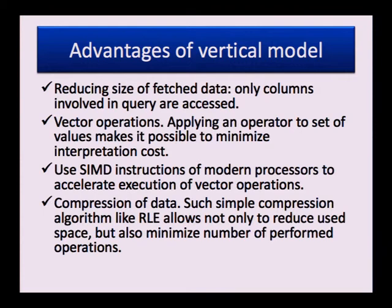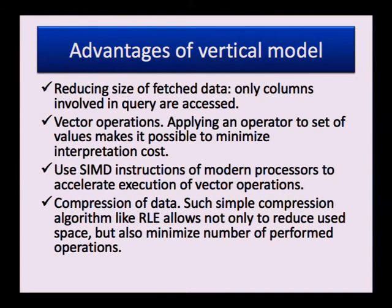There are two ways of solving this problem. We can generate native code, as was done for DB2, but that is not portable and is a very complex approach. Vector operations are another approach: we perform an operation not just for a single value but for a set of values. In this case, interpretation costs can be significantly reduced. Also, modern processors provide SIMD instructions which help perform vector operations even faster.